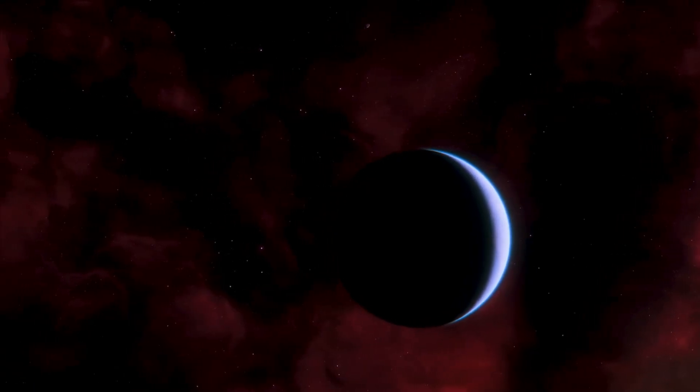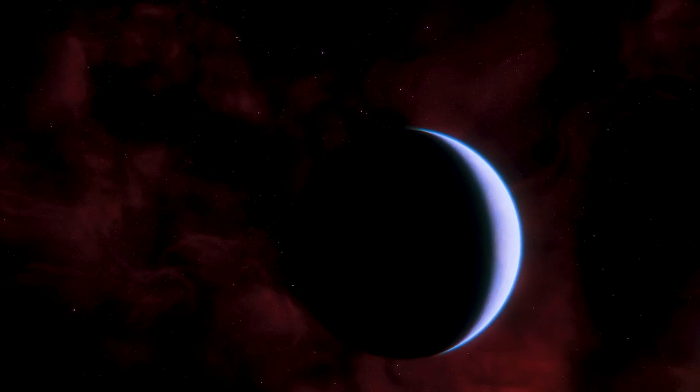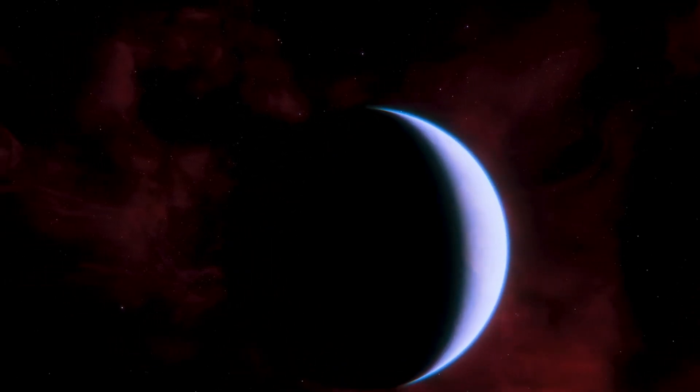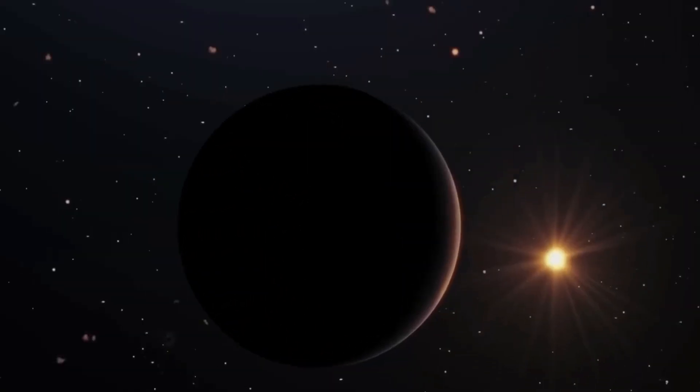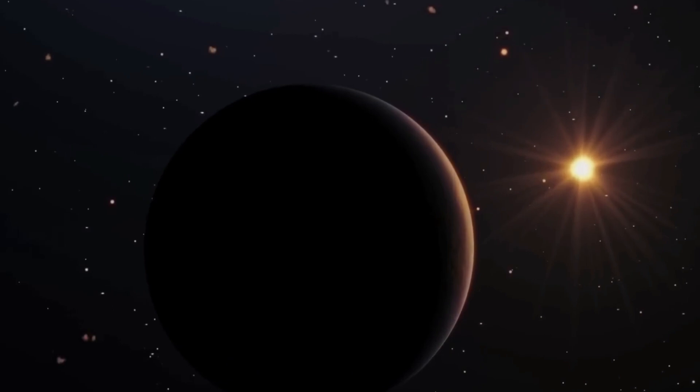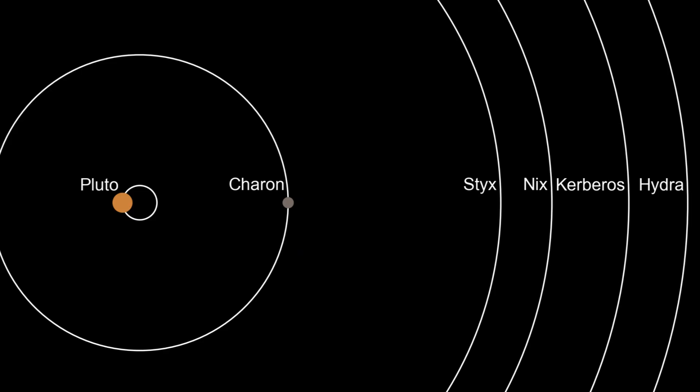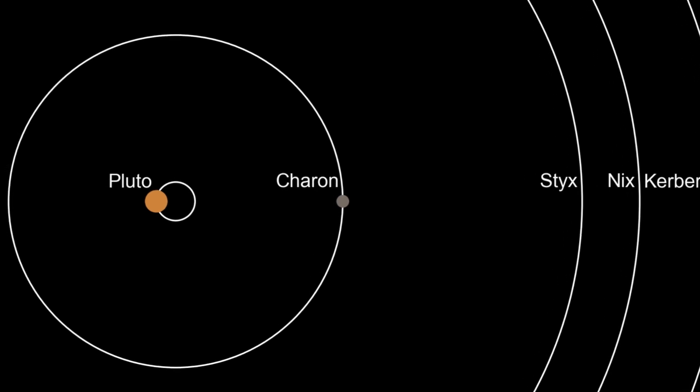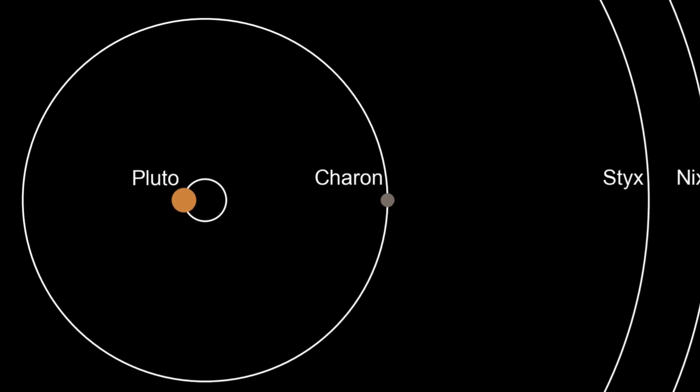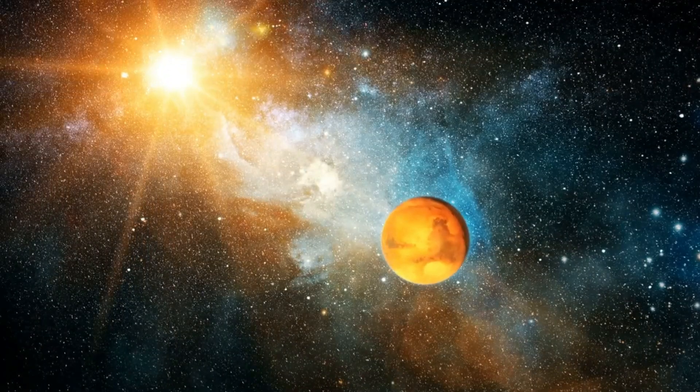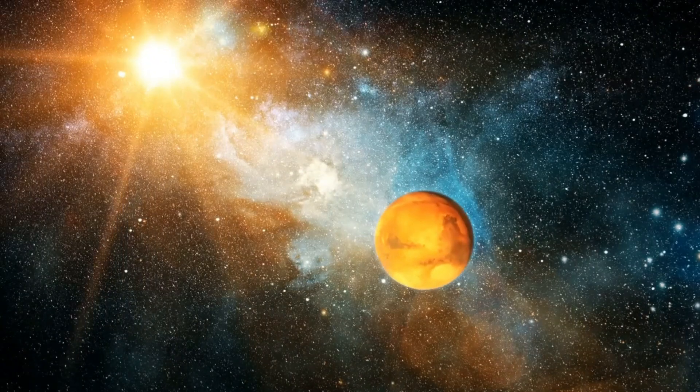Second, it raises the possibility of Planet 9 existing far beyond what we once thought was the edge of our solar system, potentially in an orbit that takes it 400 to 800 astronomical units away from the Sun. To put that into perspective, that's 10 to 20 times farther than Pluto's orbit, and its journey around the Sun could take between 10,000 and 20,000 years.